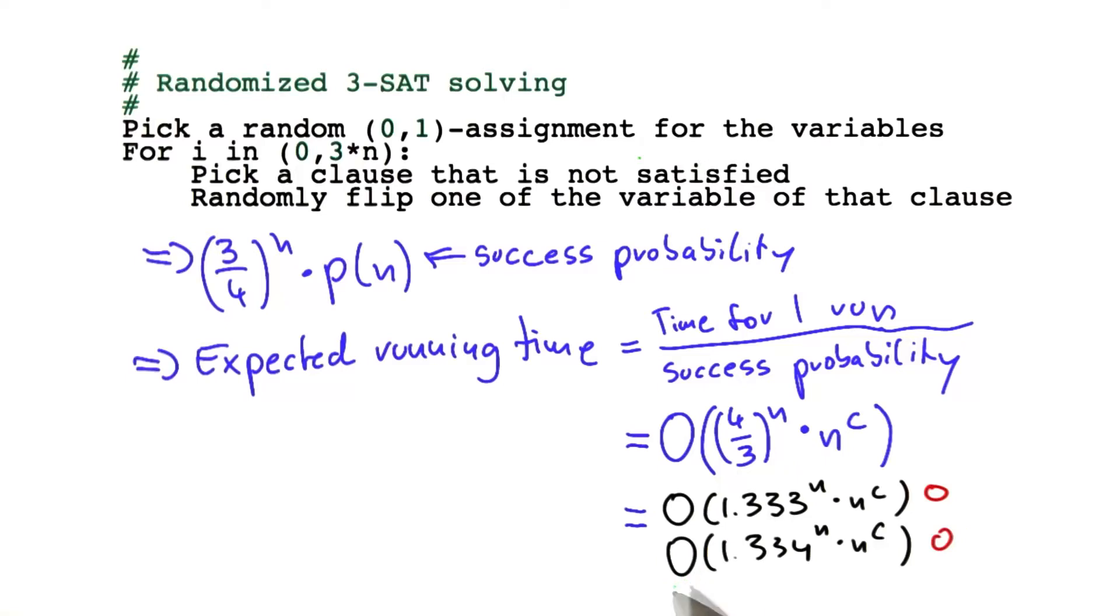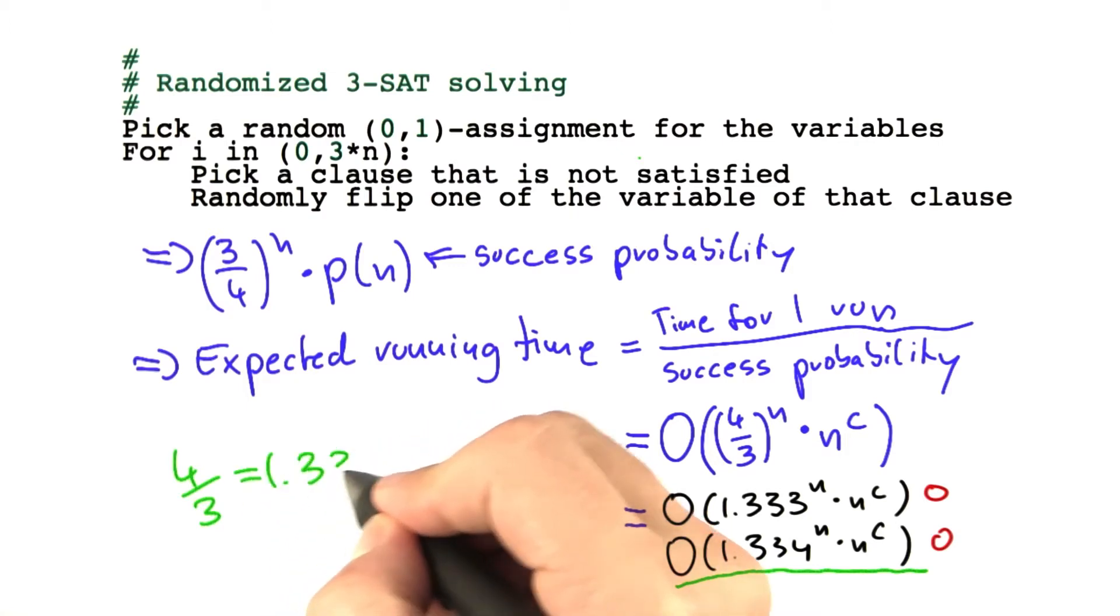Of course, this is a bit of a nitpicker question, but it equals O of 1.334 to the power of n times n to some constant. And the reason being is that 4/3 is equal to 1.33333. Of course, this goes on infinitely.